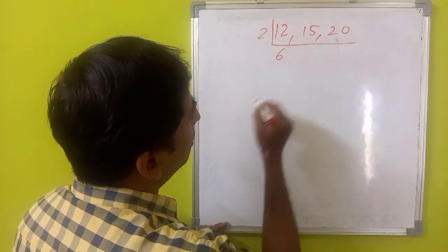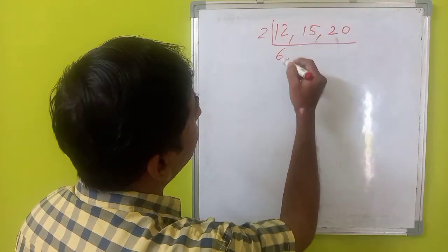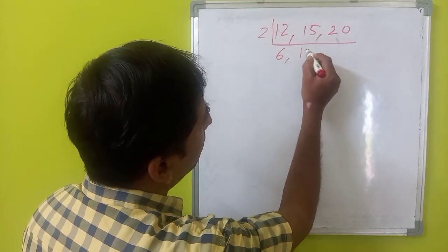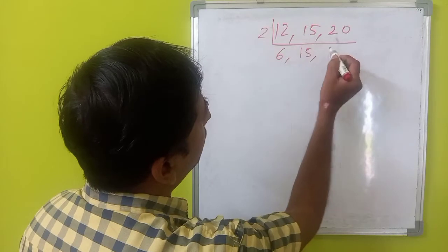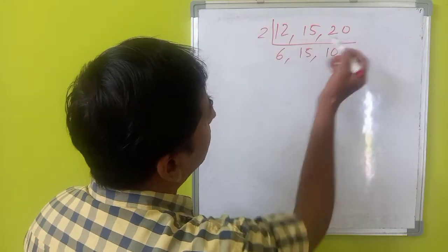So, 12 is divisible. So, we get 6 and 15 is not divisible by 2. So, we will write it as it is. 20 is divisible by 2. We can write it as 10 now.